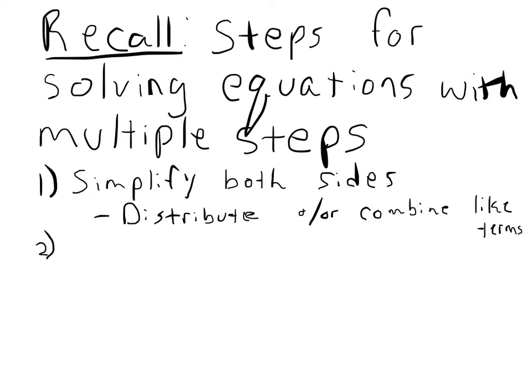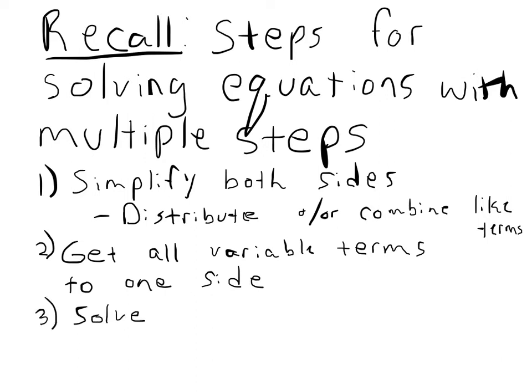Once we've done that, once each side is simplified, we need to get all variable terms to one side. And it really doesn't matter which side you pick. Third step is then to solve for the variable. And then the final thing is you can check to make sure that you got it right. There's no excuse for making mistakes.